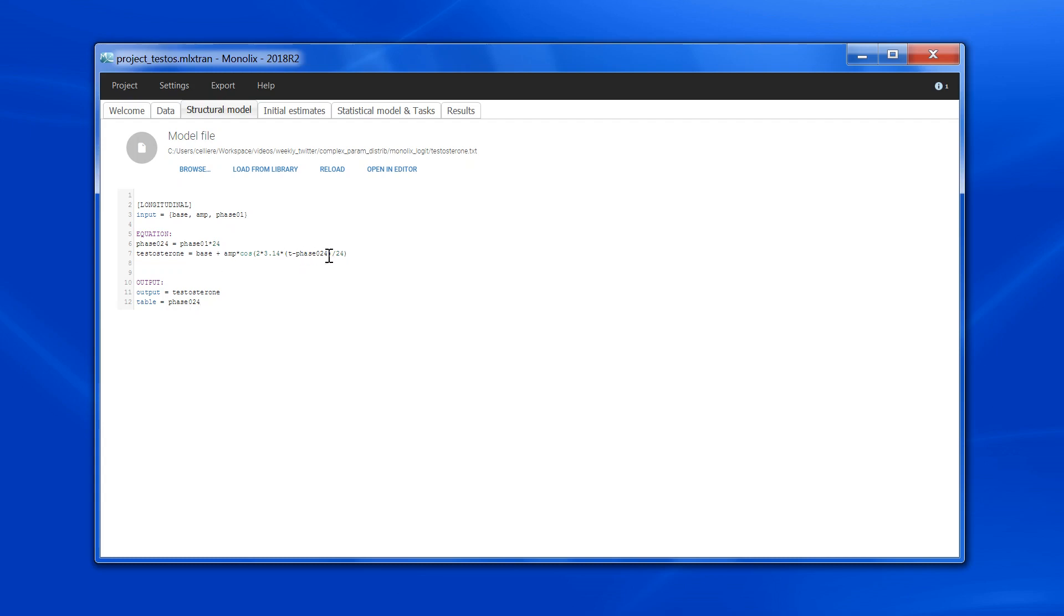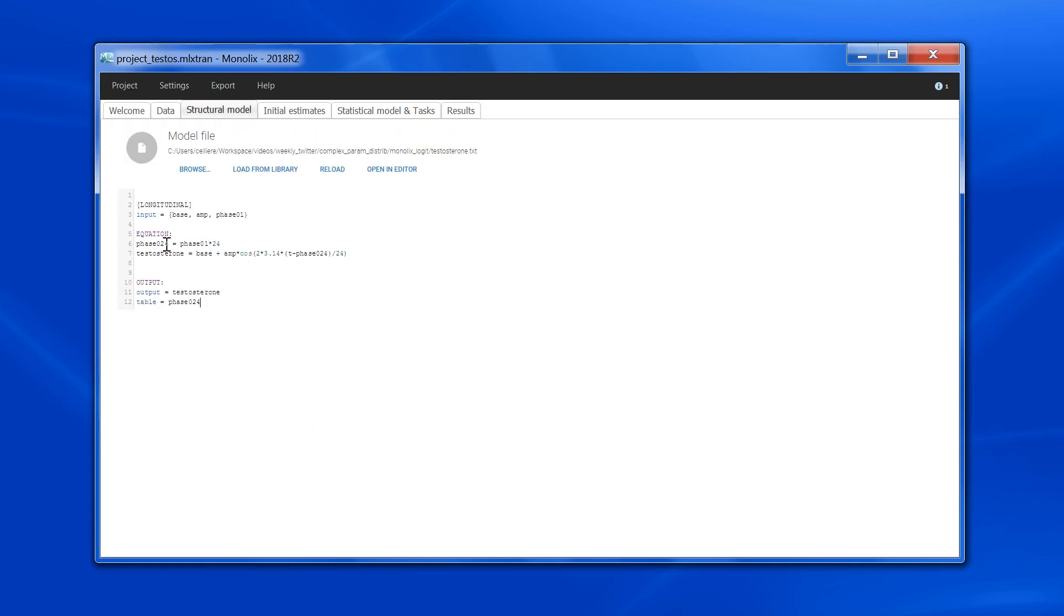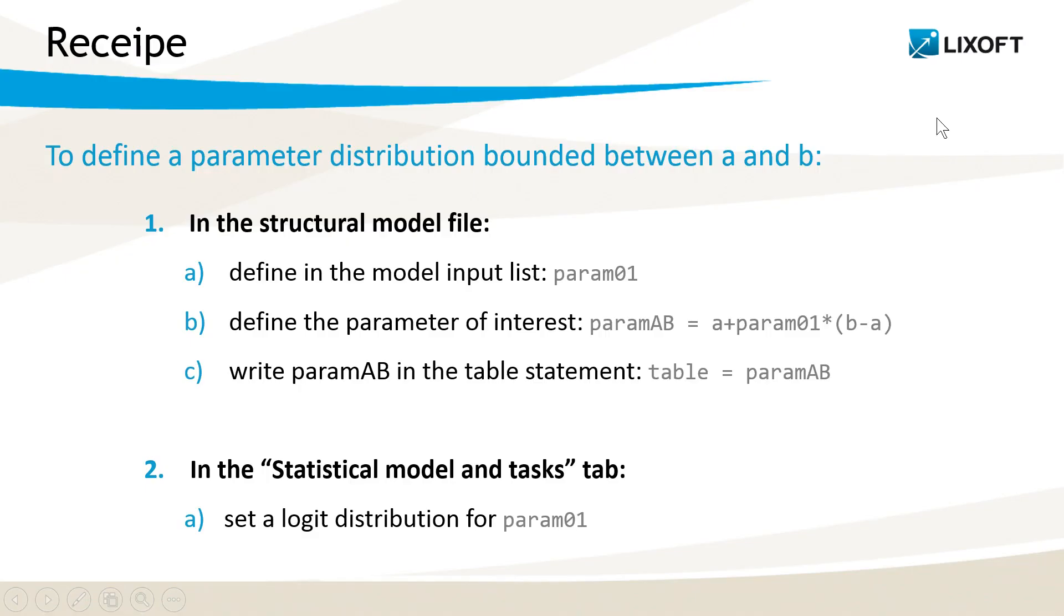and this parameter is then used in the expression. The model parameter that is estimated by Monolix in the results is phase_0_1. So if I want to know the value of phase_0_24 for each individual, I have to write the table statement here, such that this value will be outputted in the files.